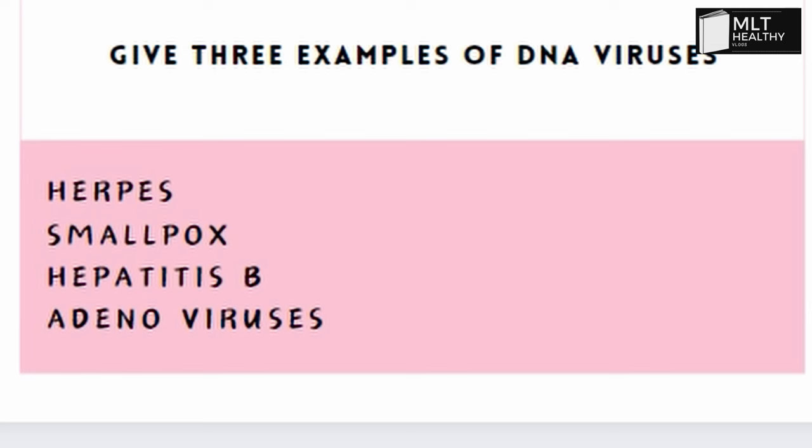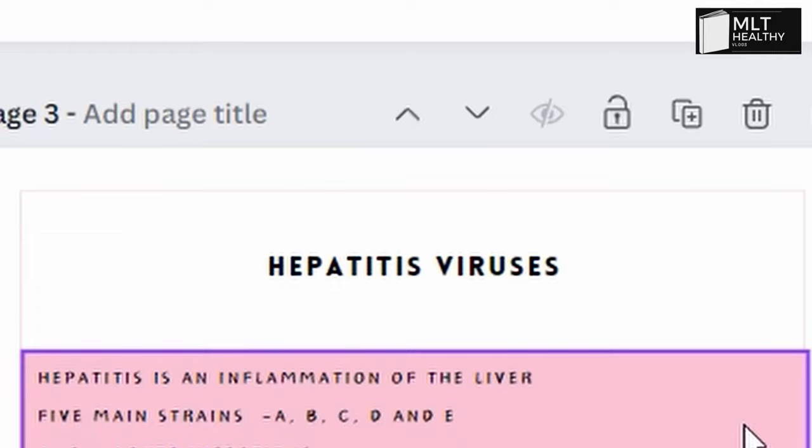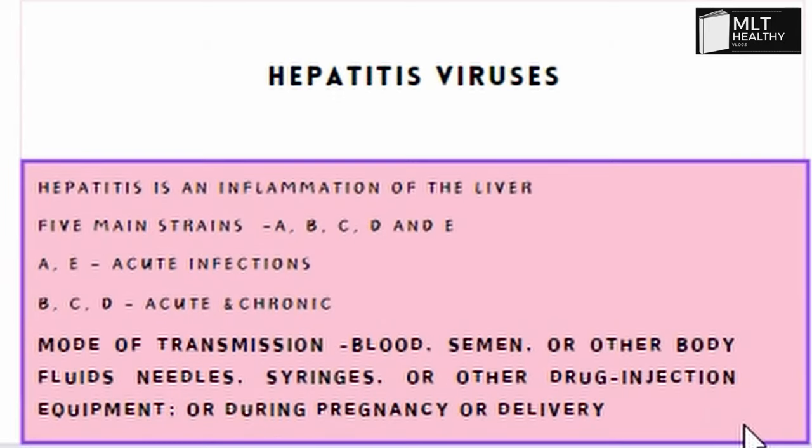The next one is the hepatitis virus. This is a big question. Hepatitis B virus — you can classify the hepatitis virus. The first type is hepatitis B virus. The hepatitis B virus is the same as liver inflammation.